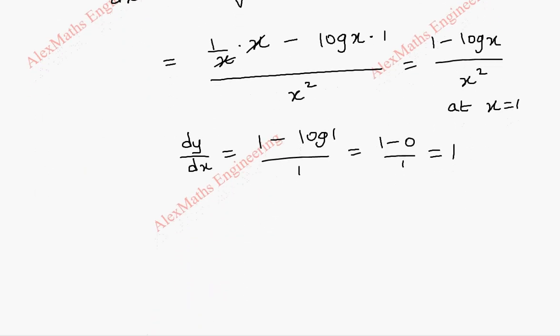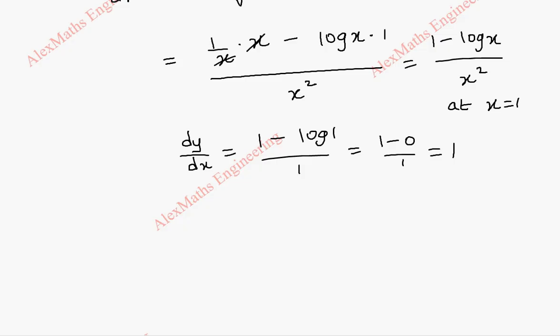Coming to the second derivative, again, we have to differentiate this using the quotient rule. So here, u will be 1 minus log x and v will be x square.